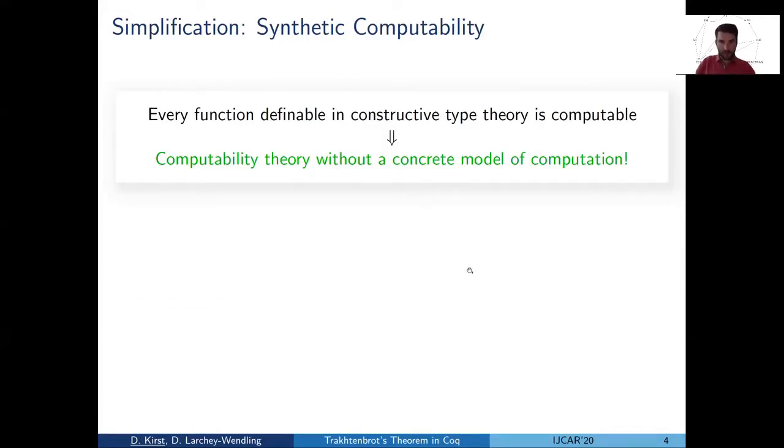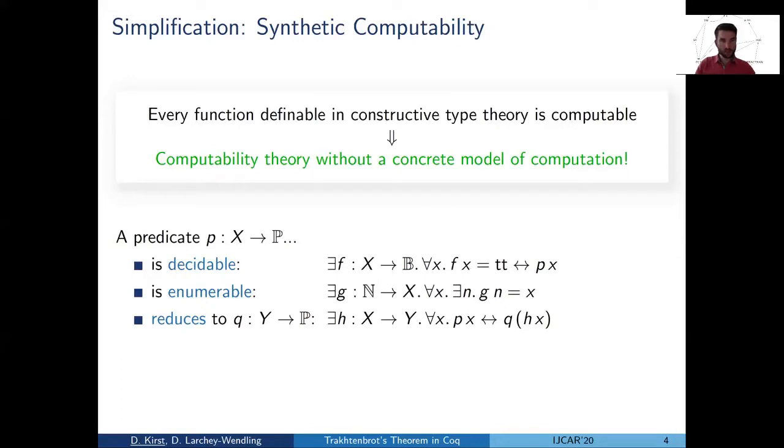For instance, we can introduce some standard notions from computability without referring to Turing machines. Given the predicate p on some type x, we can state that the predicate is decidable if there exists a Boolean function in Coq's type theory that agrees with the predicate. We can say it's enumerable if there's an enumerator from the natural numbers. And furthermore, given a second problem on some type y, we say that p reduces to q if there's a function h translating instances of p into instances of q.